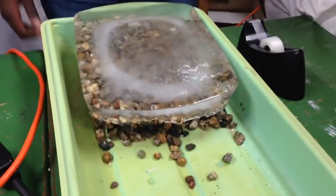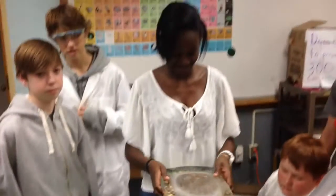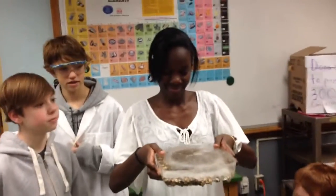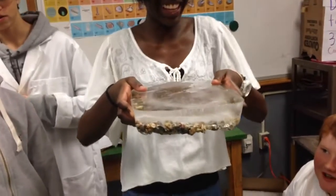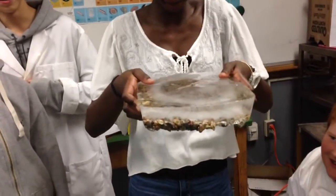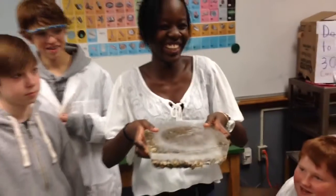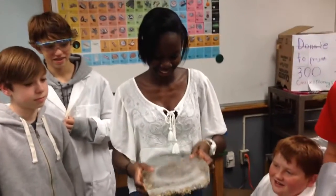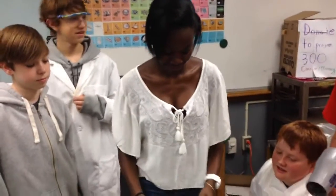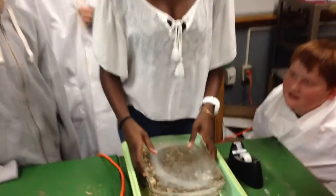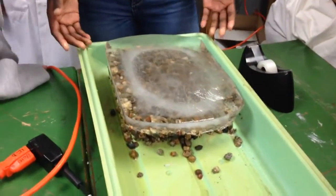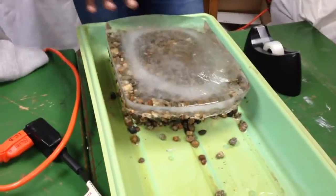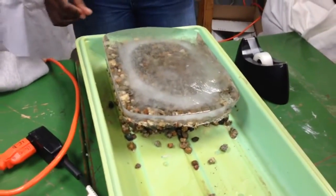Right now we've got a model of a glacier, so Phoebe's going to hold it up for us to see. A glacier is just a moving mass of ice. They form during periods where more snow is actually falling in the wintertime than is able to melt in the summer, so it just piles up in layers.